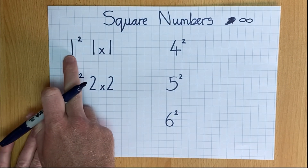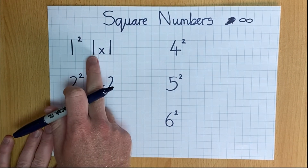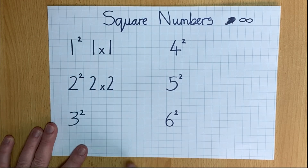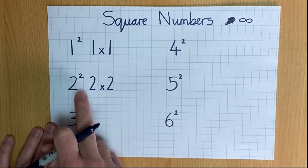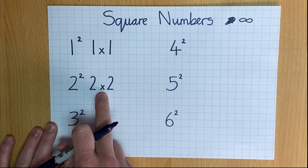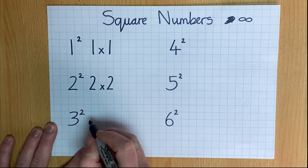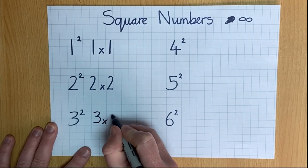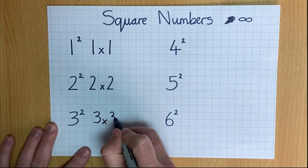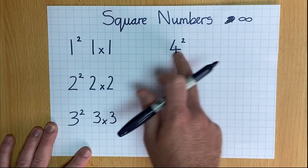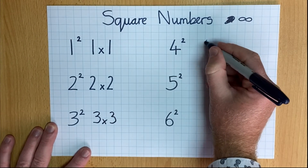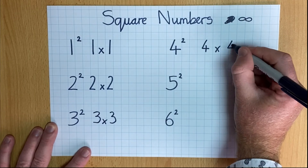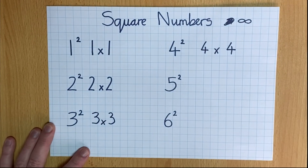Here I have one squared, and that means one multiplied by one. Two squared, two multiplied by two. Here's three squared, and if you haven't guessed already, it means three multiplied by three. Four squared, four multiplied by four.